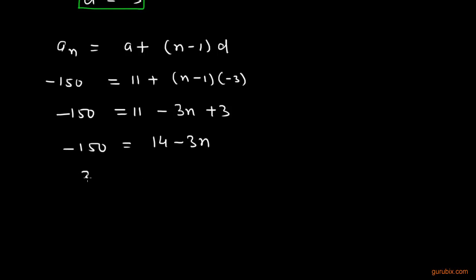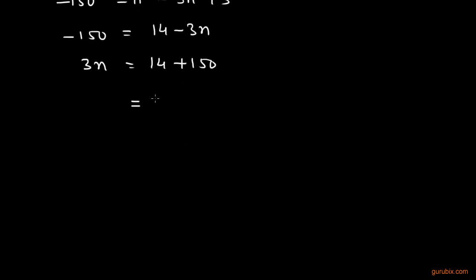Now we get 3n equals to 14 plus 150. Therefore, this is 164. Therefore, 3n equals 164 and n equals 164 over 3.